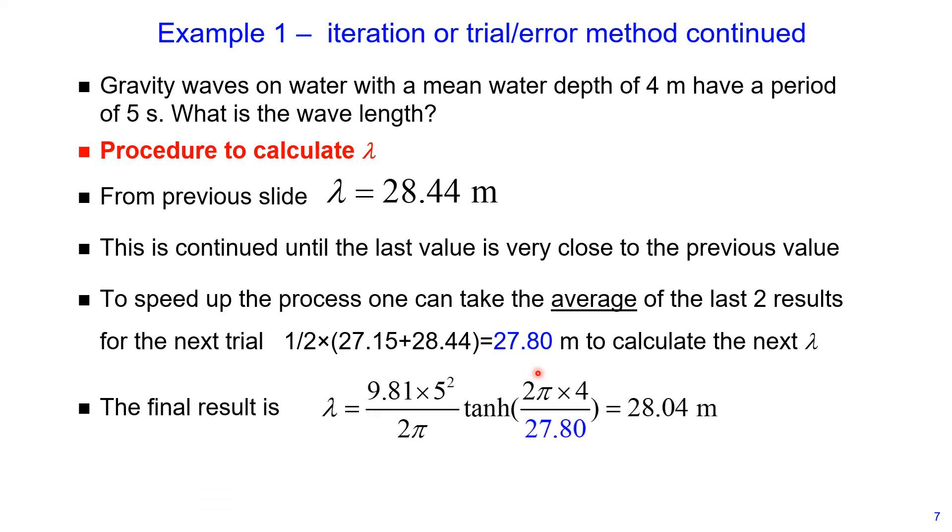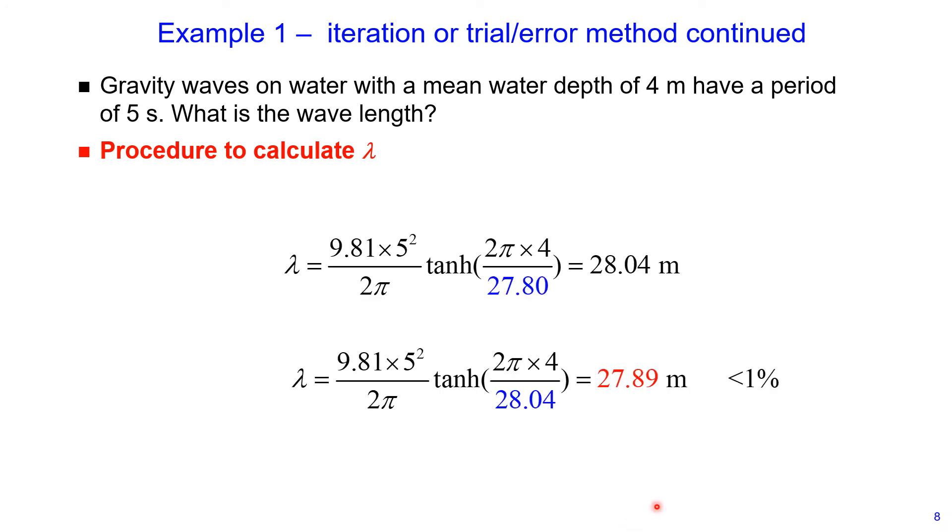And I get a result of 28.04 meters. And now I use this final number to recalculate my wavelength and I obtain 27.89 meters. And because this is less than 1% difference between the last two values, I take this as my final wavelength number. So my final wavelength number is 27.89. Conclusion for this problem: since the final value is less than 1% different from the previous value, we adopt this value of 27.89 meters to be the final wavelength value.